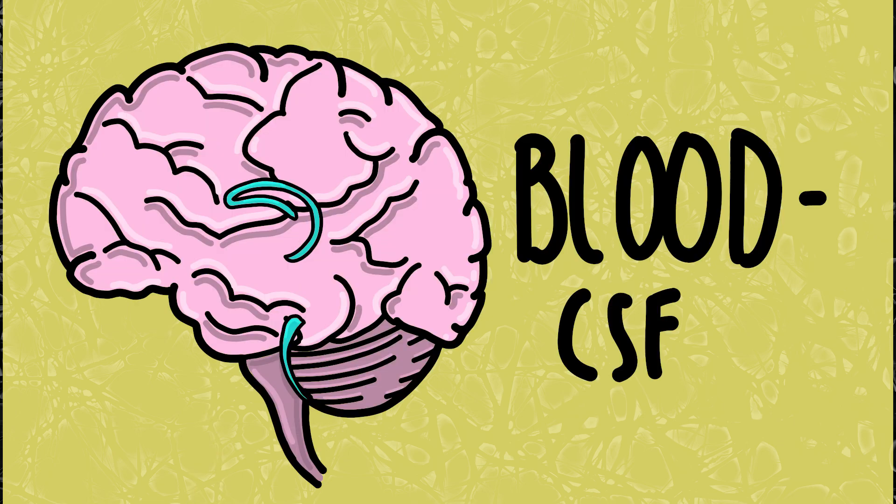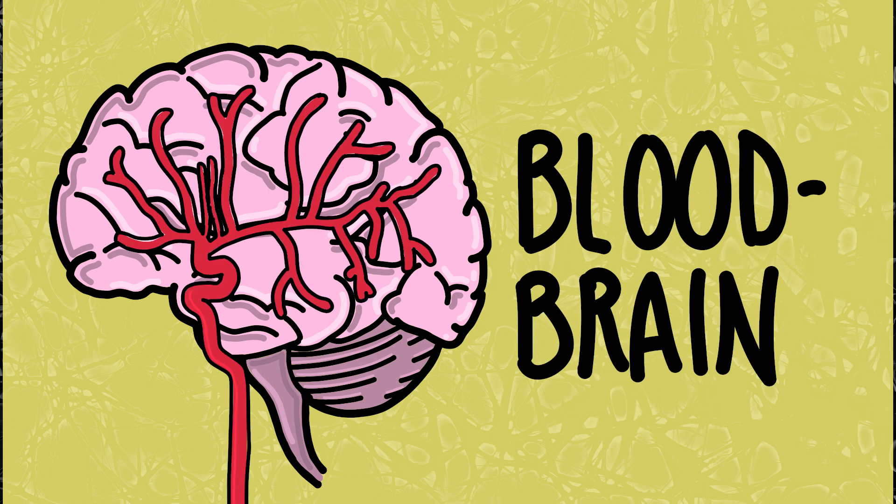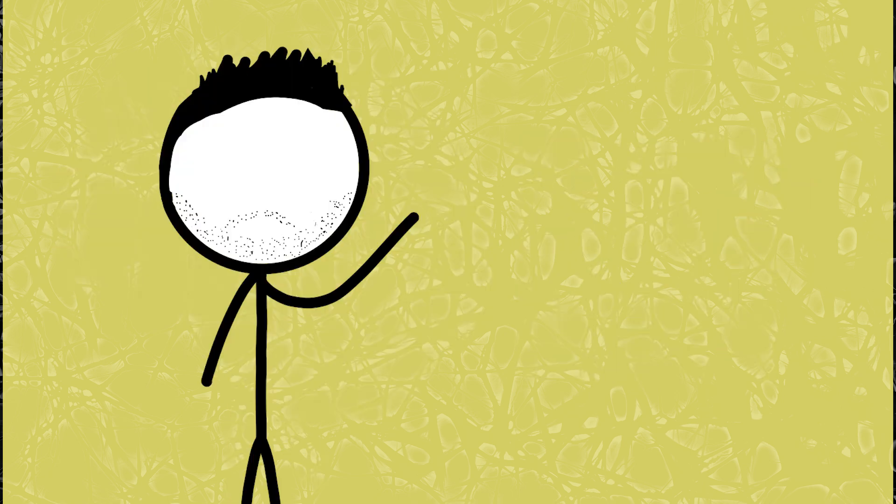So by the early 1900s we knew about two barriers. The blood CSF barrier at the choroid plexus, and the blood brain barrier around the rest of the brain. But they still didn't really know what the barrier was made of.